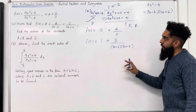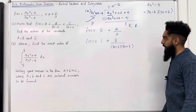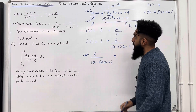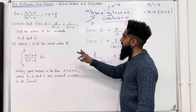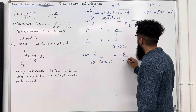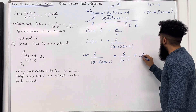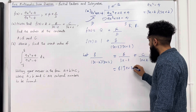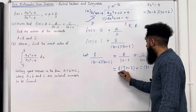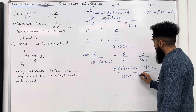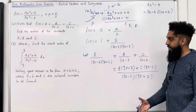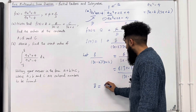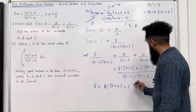Now I can let the fraction 8 over (3x minus 2)(3x plus 2) equal b over 3x minus 2 plus c over 3x plus 2, being consistent with the letters in the question. Combining the two fractions by cross-multiplying gives b times (3x plus 2) plus c times (3x minus 2), all over (3x minus 2)(3x plus 2). Since the fractions are equal, we can set the numerators equal: 8 equals b(3x plus 2) plus c(3x minus 2).